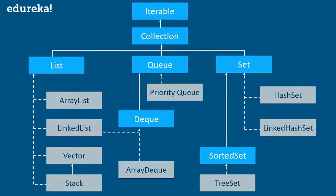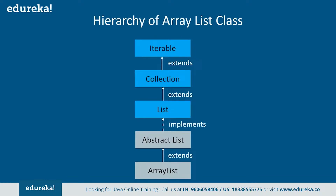Similarly, Deque is also an interface, so it extends and inherits the Queue interface. Now talking about ArrayList, it uses a dynamic array for storing the elements. It inherits the AbstractList class and implements the List interface. Then the List interface extends the Collection and Iterable interfaces in hierarchical order. So this is about the hierarchy of the ArrayList class.